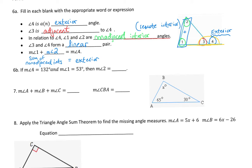On this part of the test, you're going to see two big things. You're going to see the interior angles, which have a sum of 180, and you're going to see the exterior angles, which are equal to those two non-adjacent interiors.